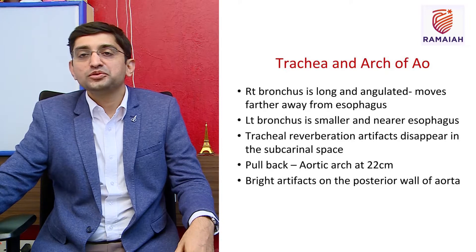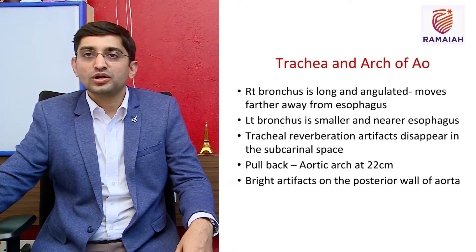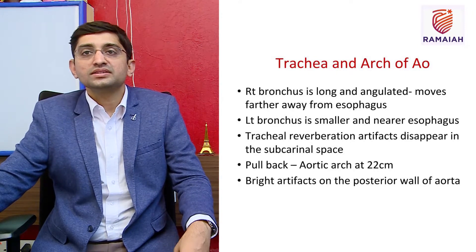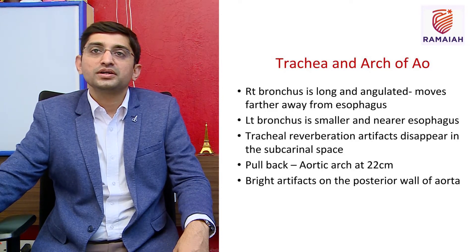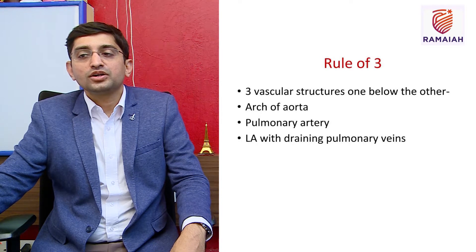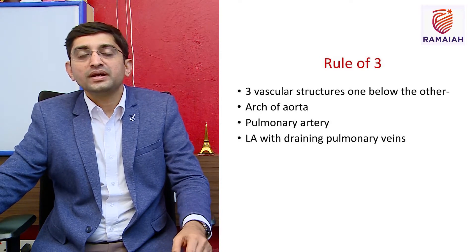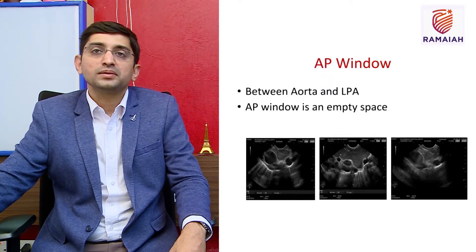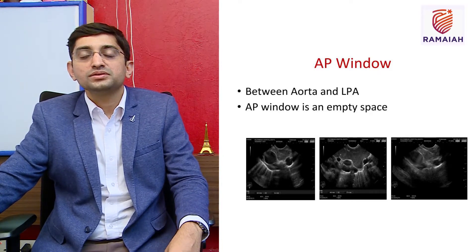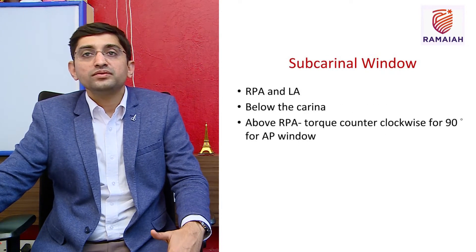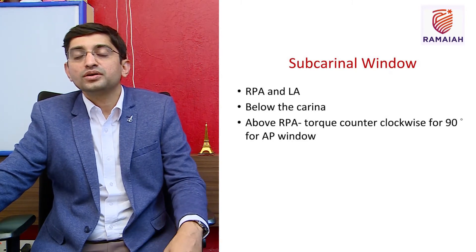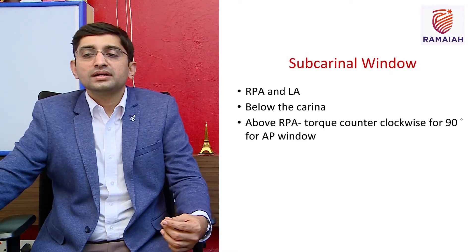Above the left atrium is the right pulmonary artery, and between the right pulmonary artery and the carina is the subcarina space. The trachea produces reverberation artifacts due to its C-shaped cartilages. The right bronchus is long and angulated, farther from the esophagus, whereas the left bronchus is shorter and nearer to the esophagus. There are also bright artifacts from the posterior wall of the aorta.